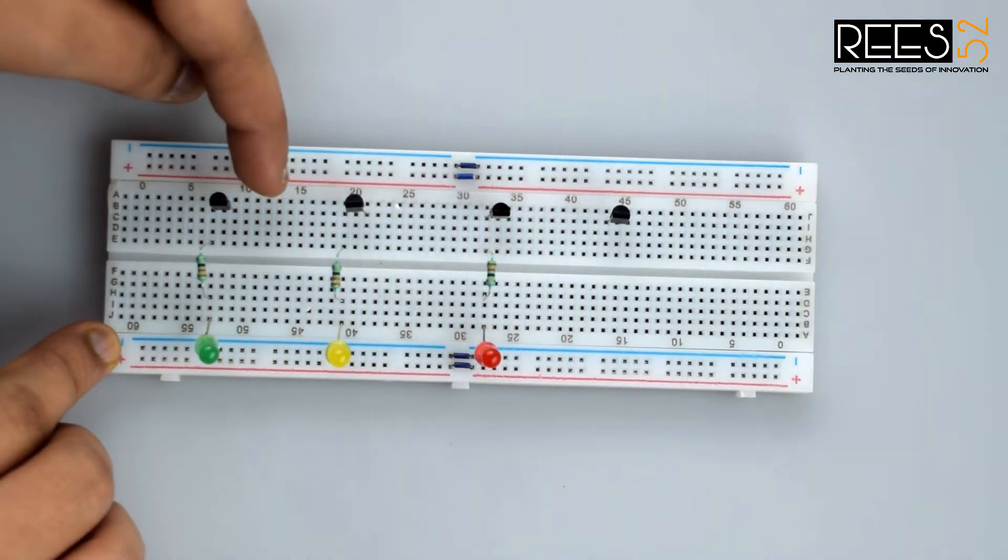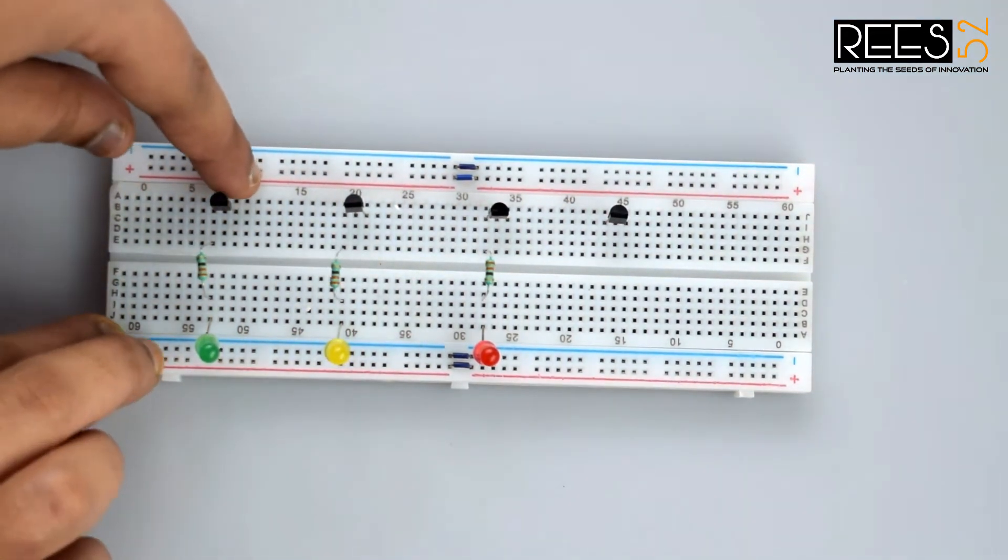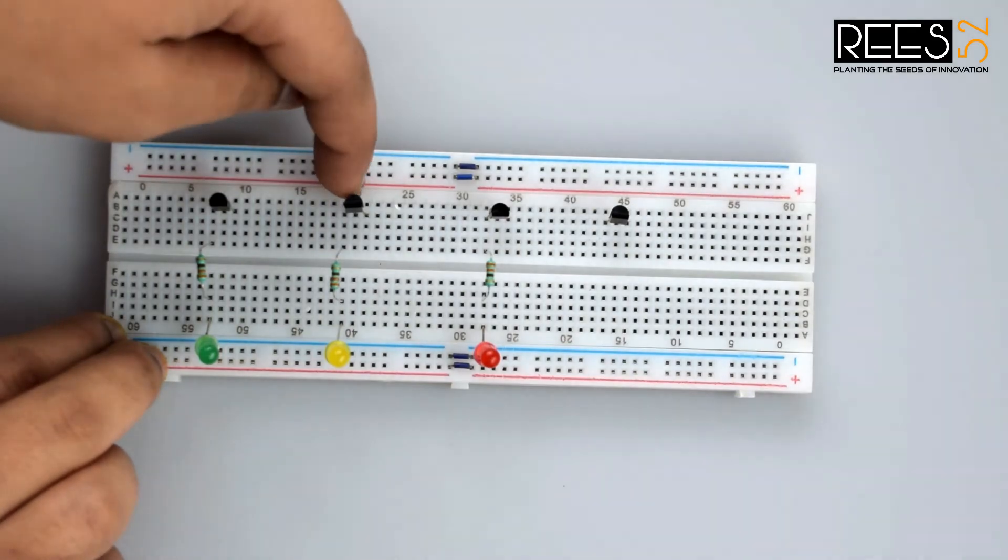Now connect all the emitter pins of the transistor Q1, Q2 to the positive rail on the breadboard.